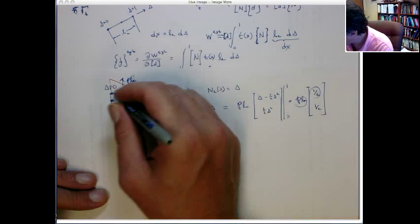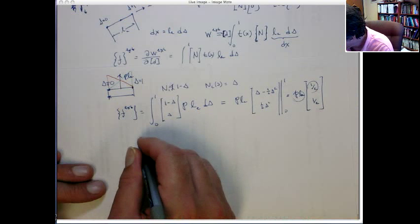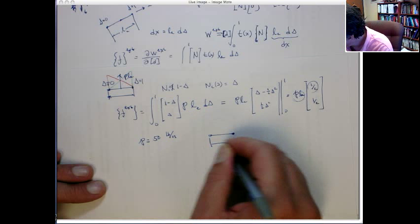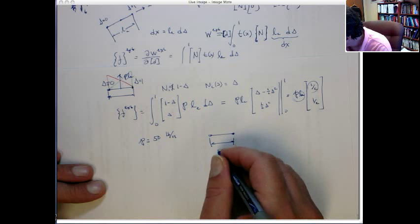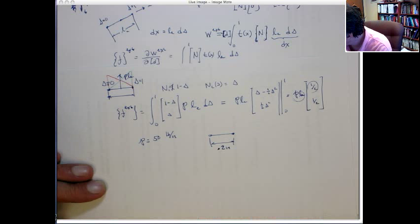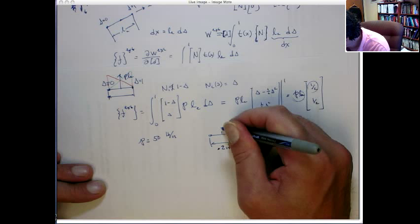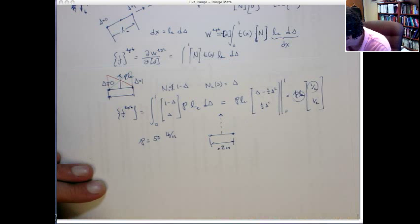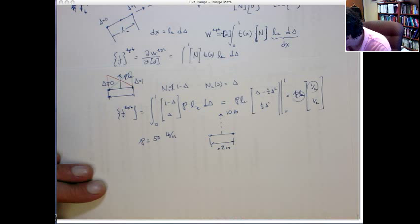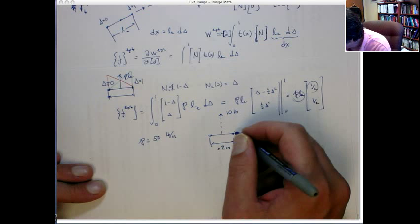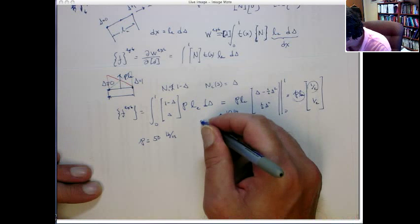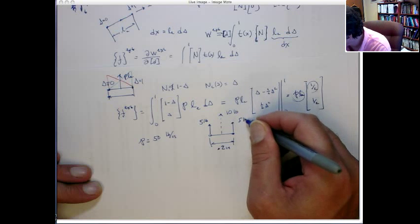This is what you would expect. p times the length of the element is the total force on this edge, and what it's saying is you put half at one node and half at the other. For example, if p is 50 pounds per inch and the element width is 0.2 inches, the total force is 10 pounds — so 5 pounds at each node.